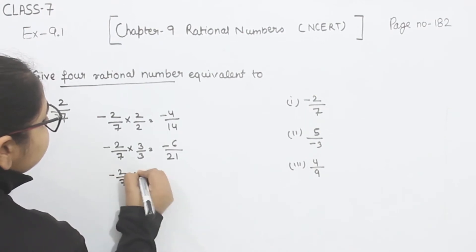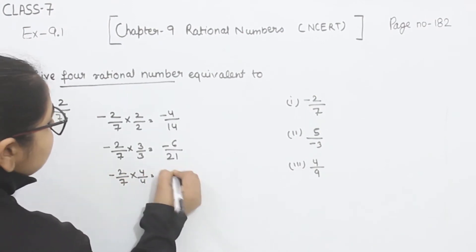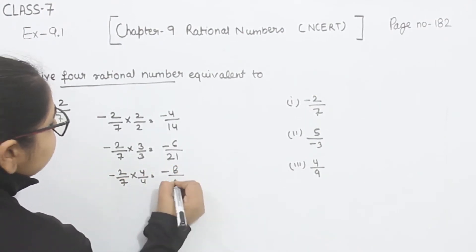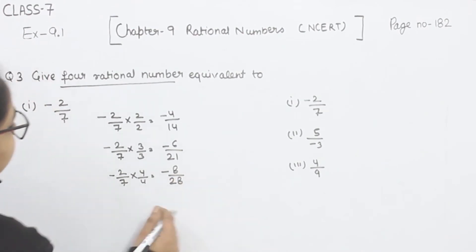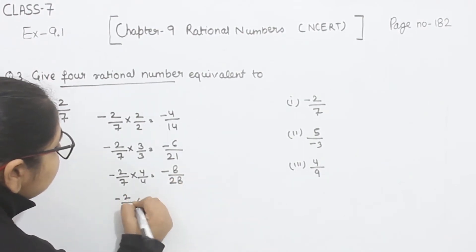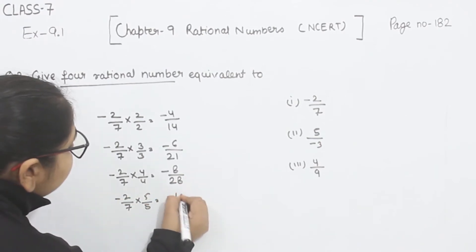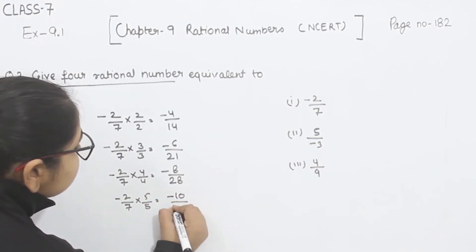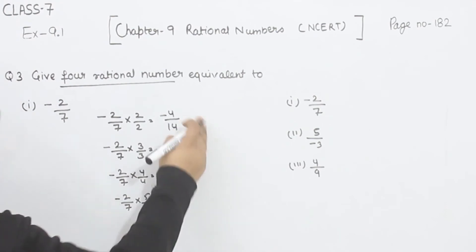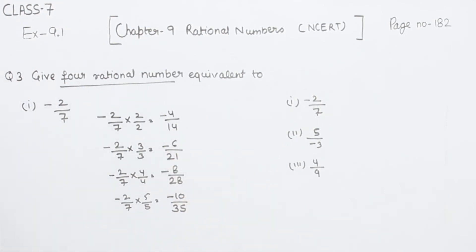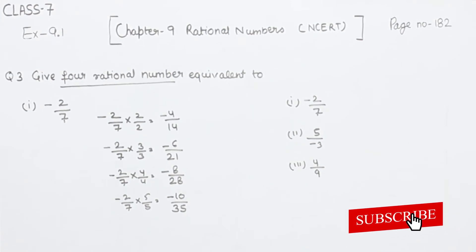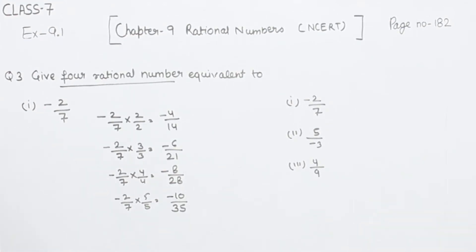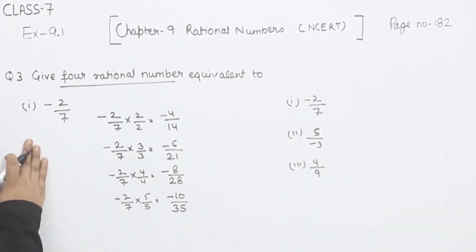Minus 2 by 7 multiplied by 4: 4 twos are 8 and 7 fours are 28, giving minus 8 by 28. Now minus 2 by 7 multiplied by 5: 5 twos are 10 and 5 sevens are 35, giving minus 10 by 35. So these are the 4 equivalent rational numbers: minus 4 by 14, minus 6 by 21, minus 8 by 28, and minus 10 by 35. This is part 1.